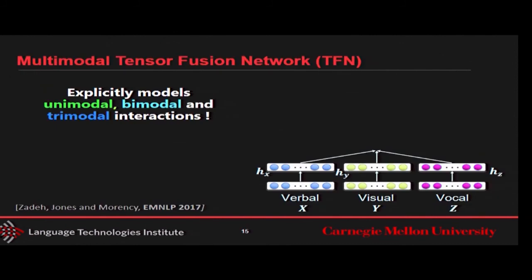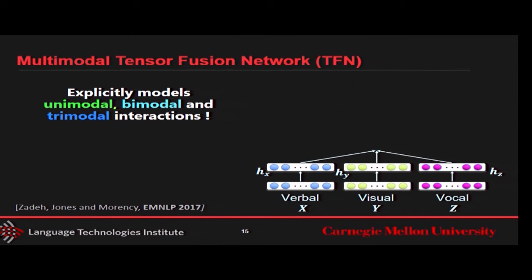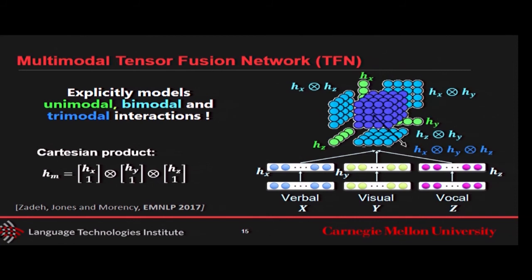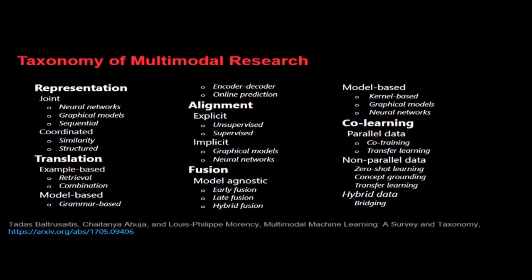If you want to solve that, one way is neural networks — yes, I drank the Kool-Aid. Neural networks are good for certain tasks, and I'll be happy to discuss that later. This gives you an example of representation where unimodal, bimodal, and trimodal interactions are all explicitly created and represented. This is the long taxonomy of multimodal fusion.